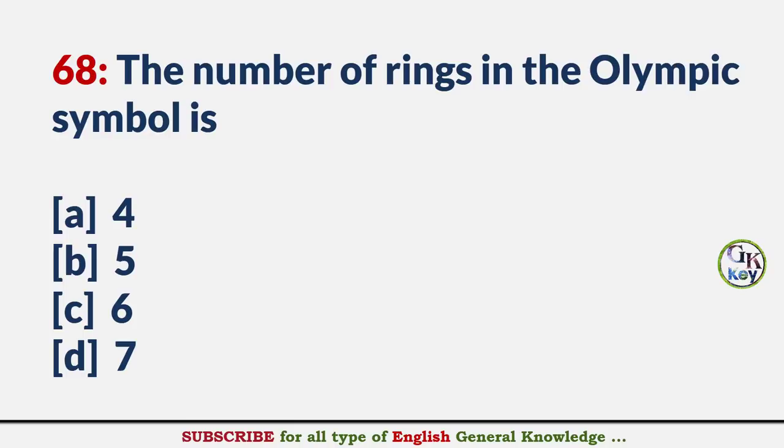The number of rings in the Olympic symbol is? Answer B: 5.